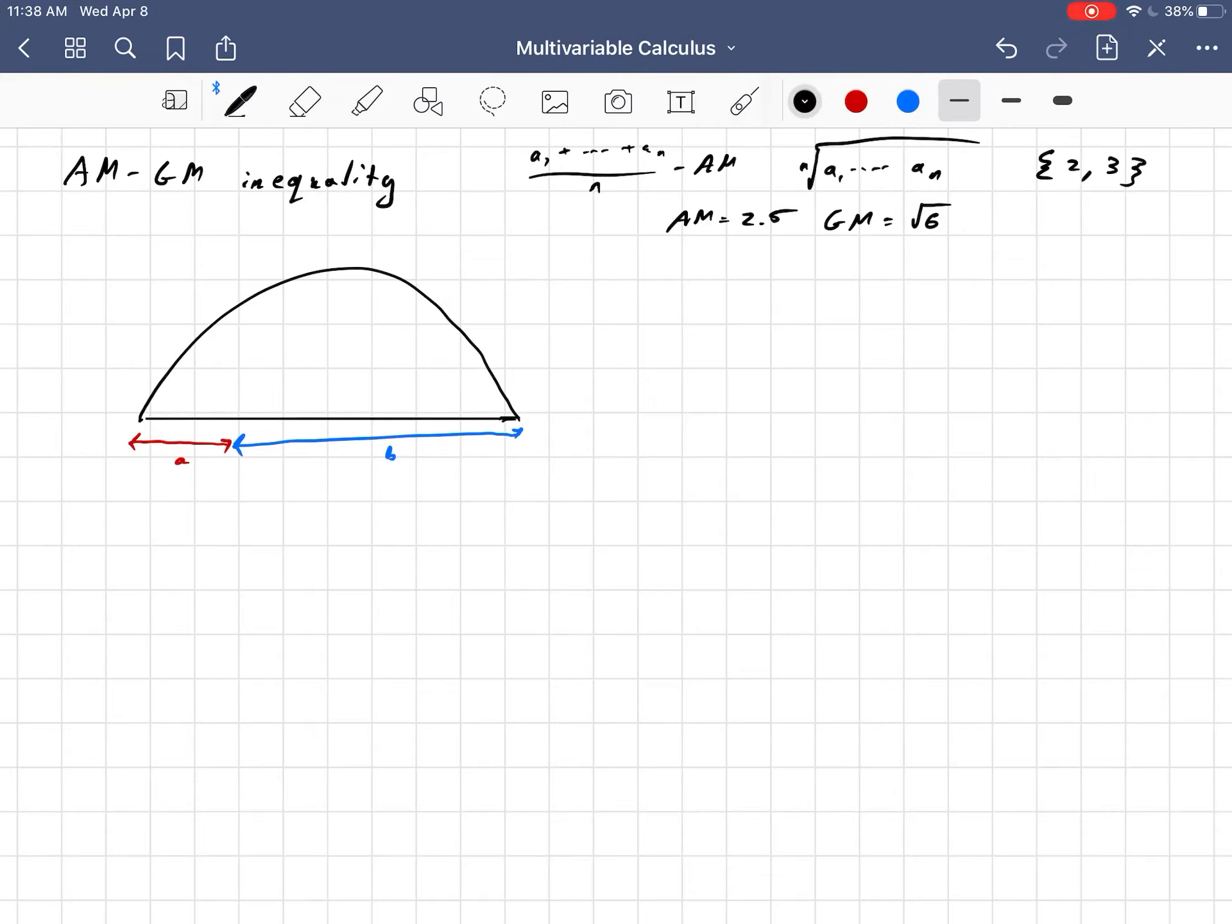Then this length here from the center of the semicircle up to the top is A plus B over 2. In other words, the arithmetic mean.